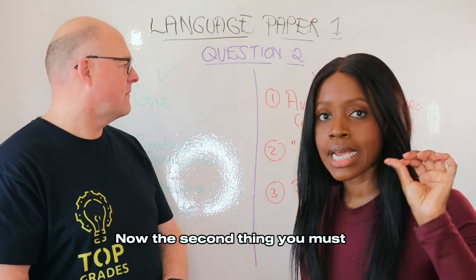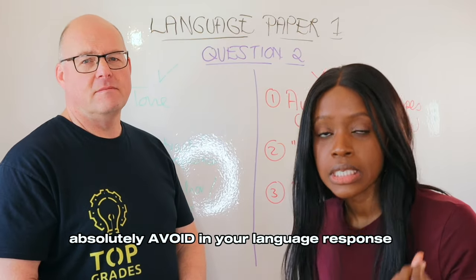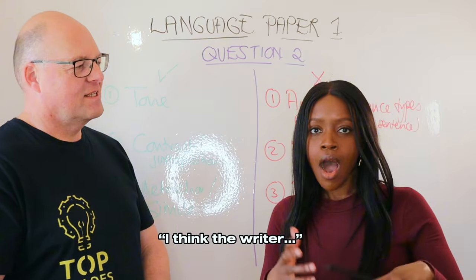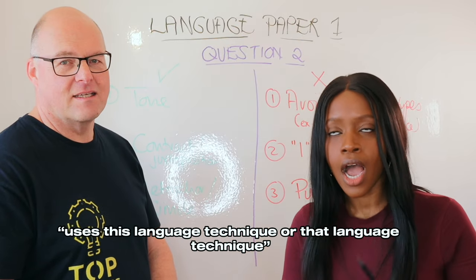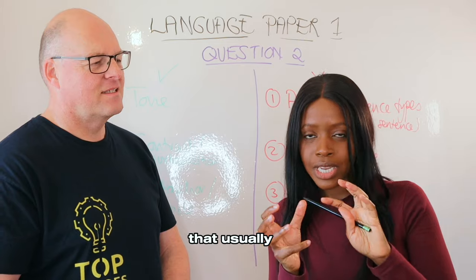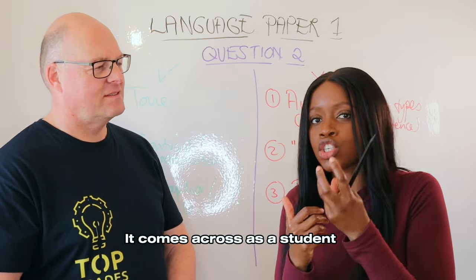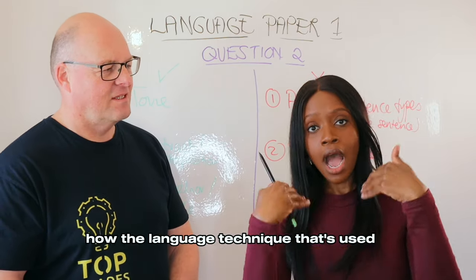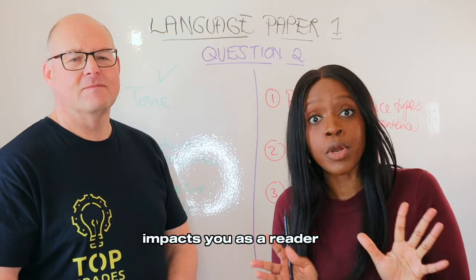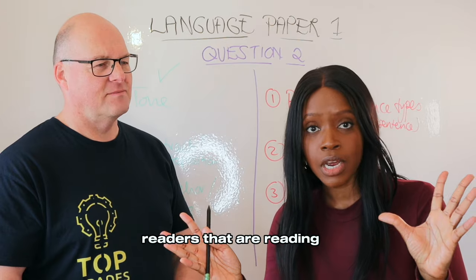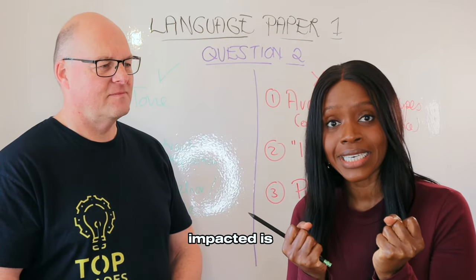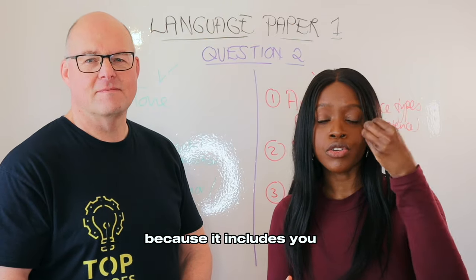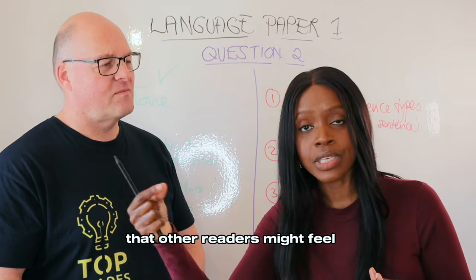The second thing you must absolutely avoid in your language response for Paper 1 is using 'I' statements. Saying 'I think the writer uses this technique' or 'I think this is how it makes us as readers' comes across as a little amateurish — it suggests the student doesn't have a strong handle on what they're talking about. Instead, use 'we' statements or 'us' statements — plural pronouns — because it shows an awareness that other readers might feel the same way as you, as well as including yourself as a reader.